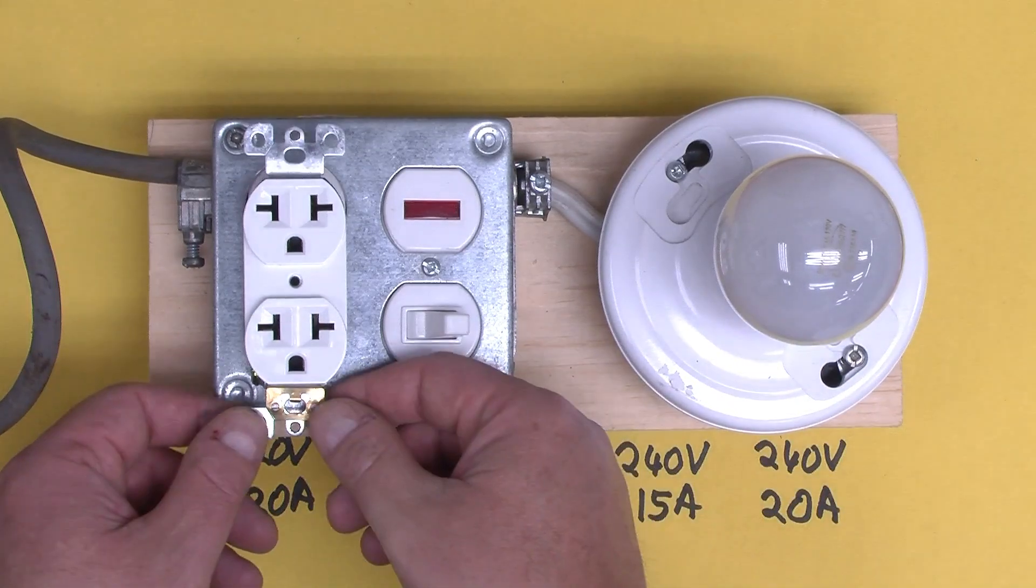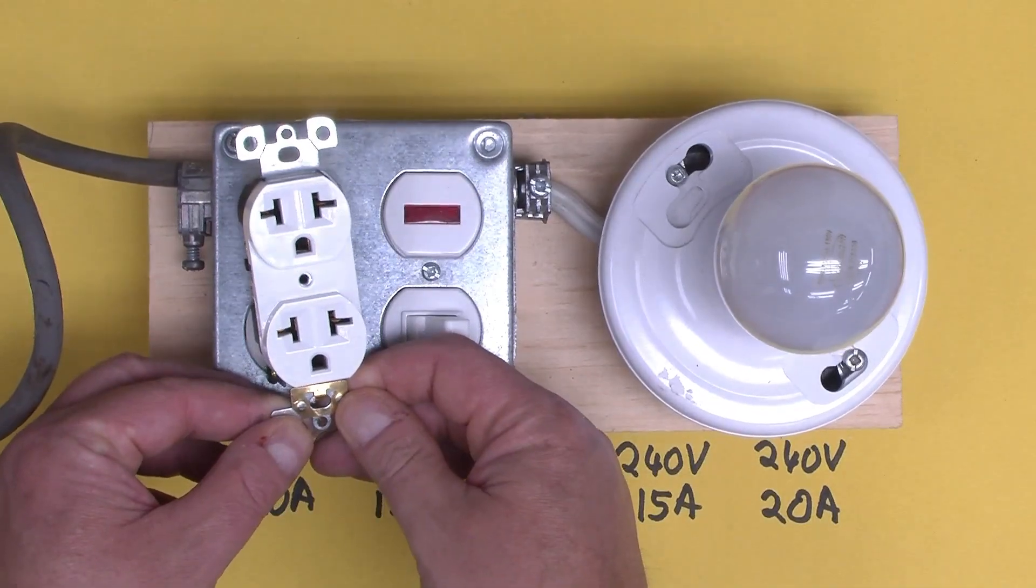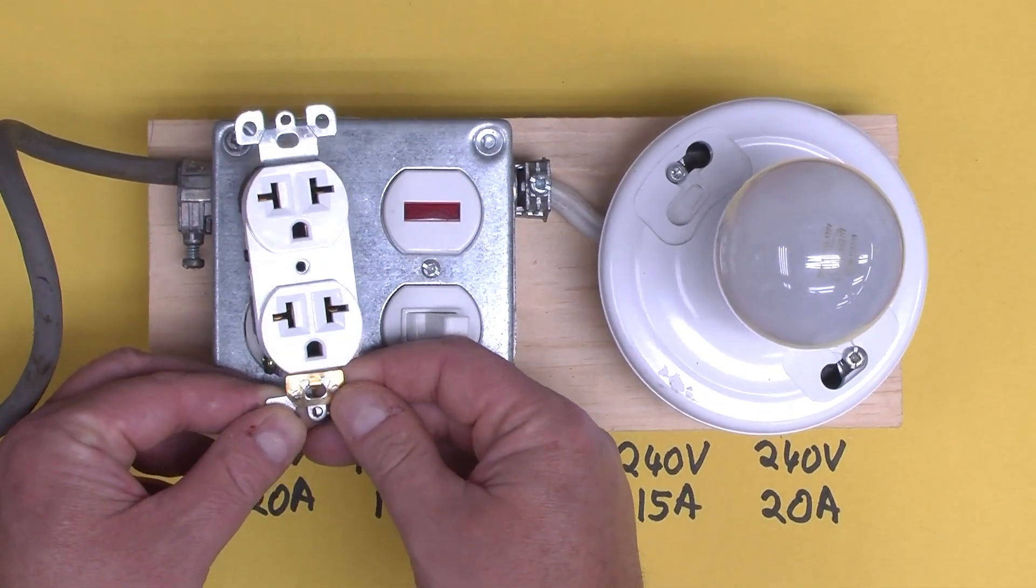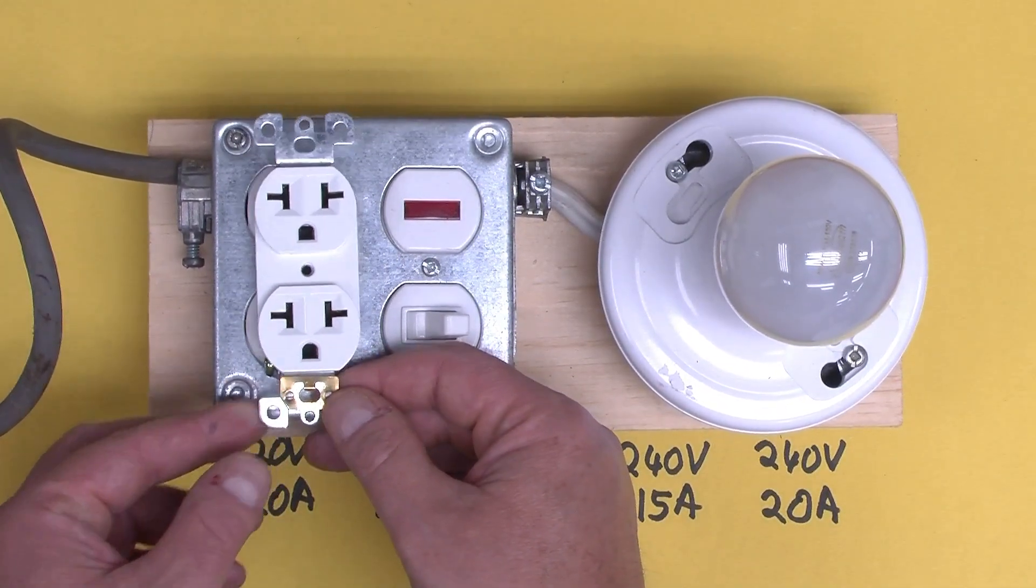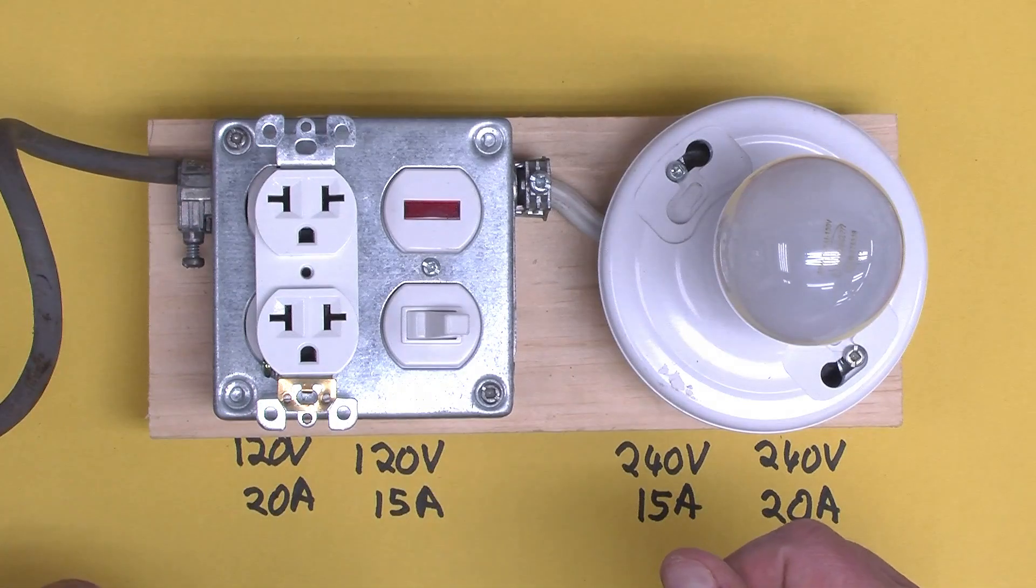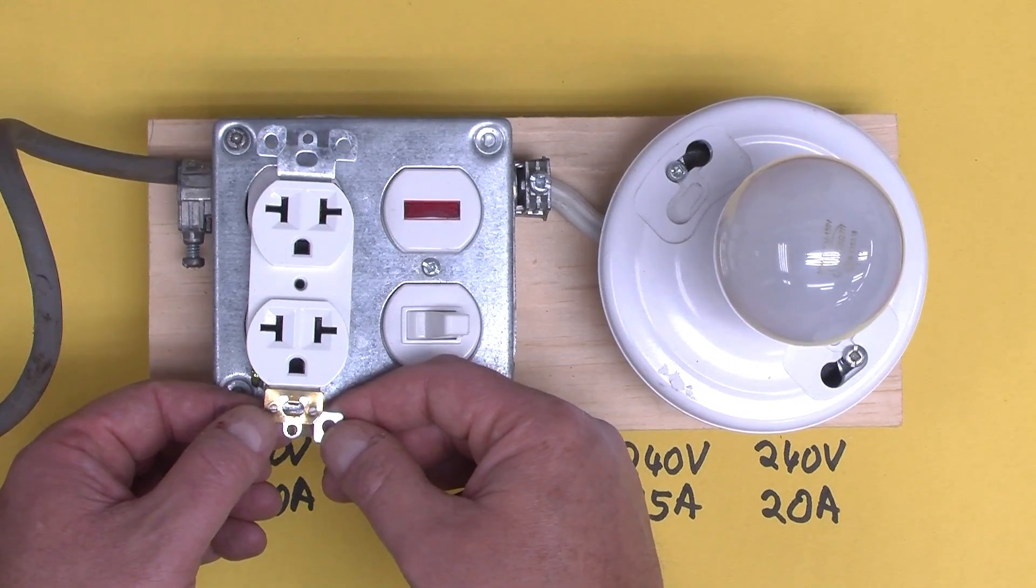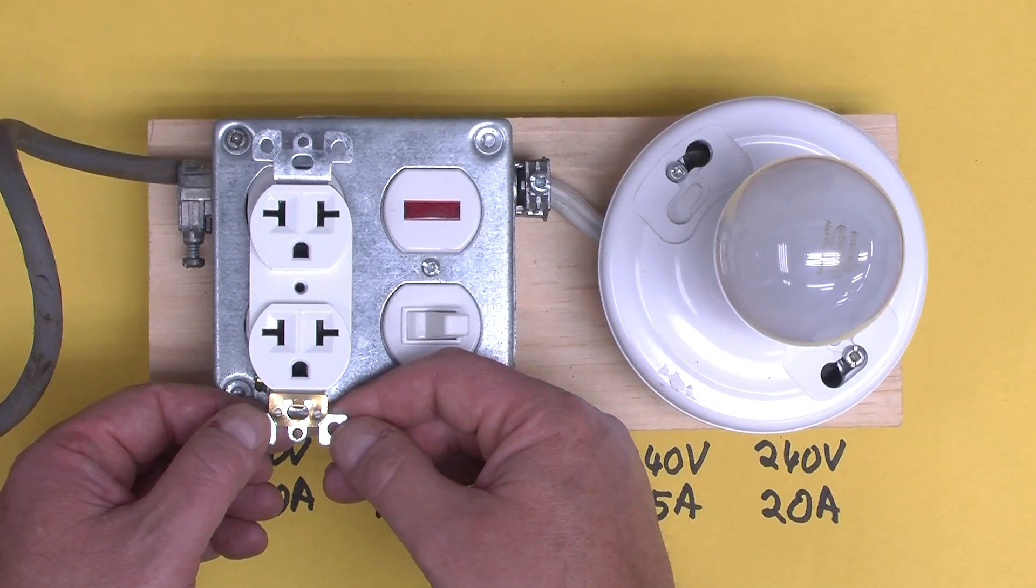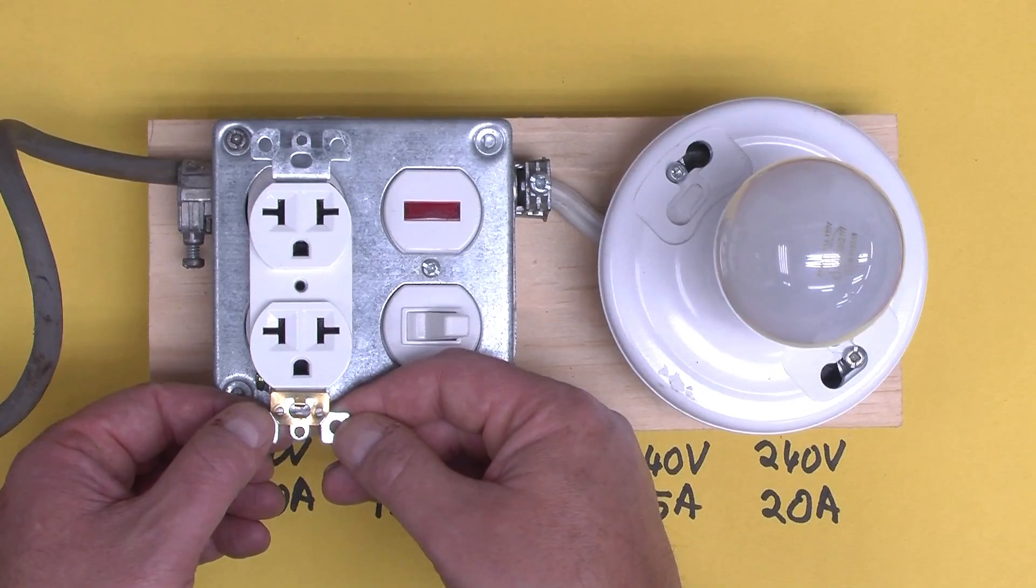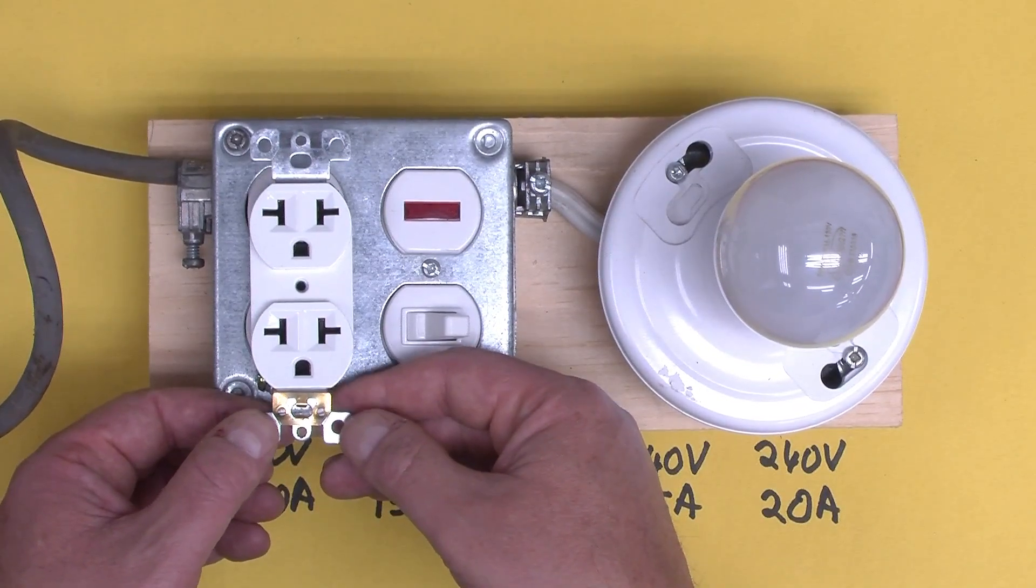So that's one possible use, and in fact, that's the only use that I might ever consider for something like this. Again, in some sort of a test jig that needs to accept all sorts of different plugs, but never as an outlet to run devices that should either be run at 120 or 240 volts, but not at both.